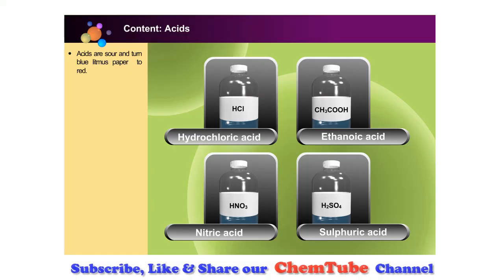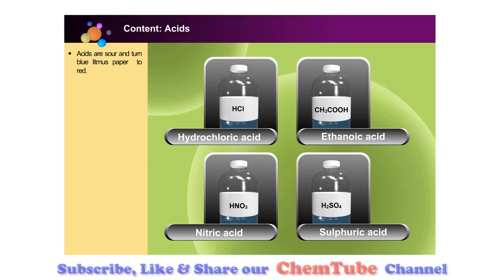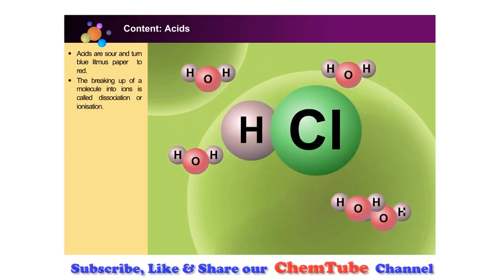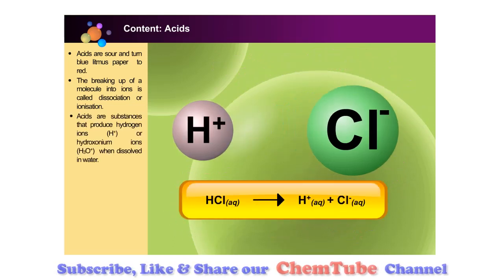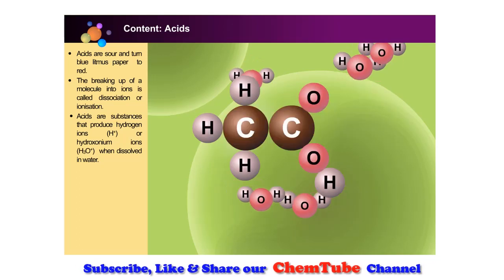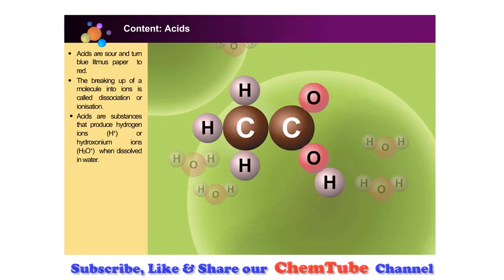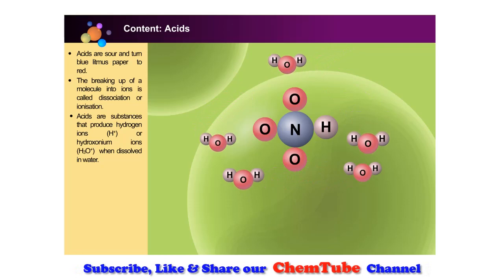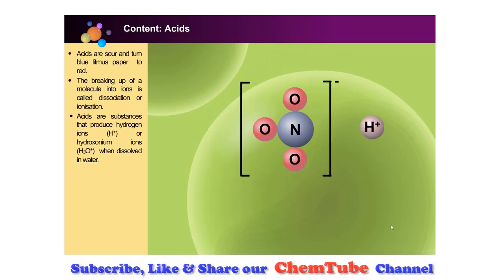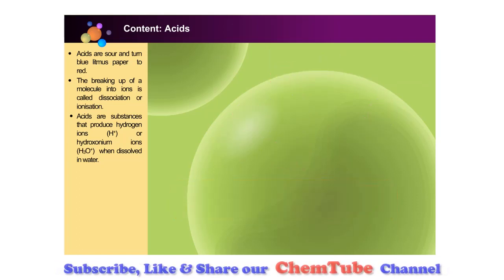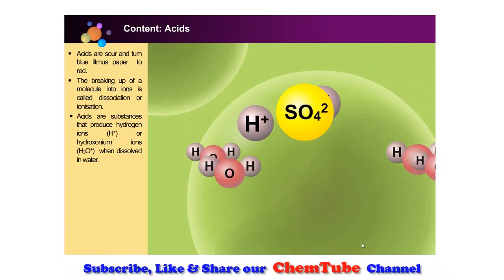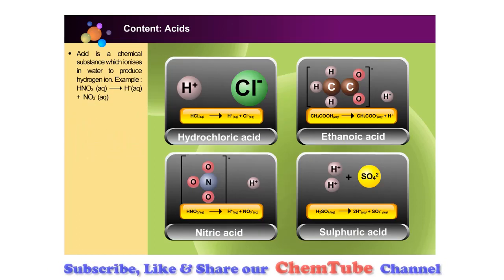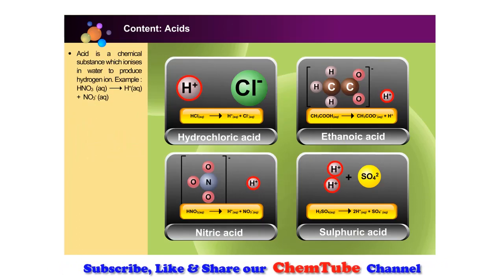We have learned that acids are sour and that they turn blue litmus red. What gives these acids their acidic properties? The molecule of hydrogen chloride ionizes to form a hydrogen ion and a chloride ion when dissolved in water. The ethanoic acid molecule ionizes to form a hydrogen ion and an ethanoate ion. The nitric acid molecule ionizes to form a hydrogen ion and a nitrate ion. The sulfuric acid molecule ionizes to form a hydrogen ion and a sulfate ion. All of them dissociate to form hydrogen ions when dissolved in water.